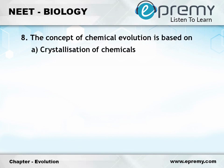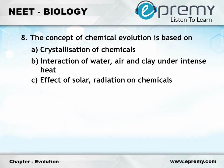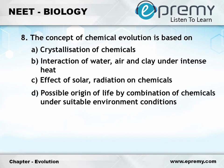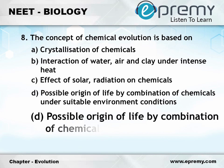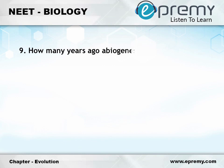Question number 8: The concept of chemical evolution is based on. Option A: Crystallization of chemicals. Option B: Interaction of water, air and clay under intense heat. Option C: Effect of solar radiation on chemicals. Option D: Possible origin of life by combination of chemicals under suitable environmental conditions. And the answer is Option D.